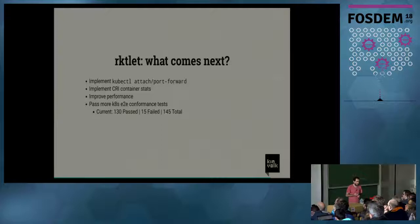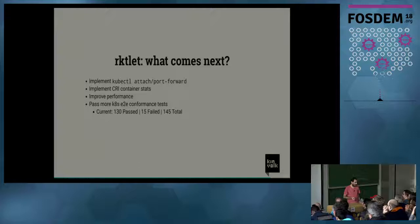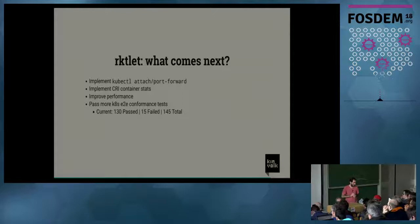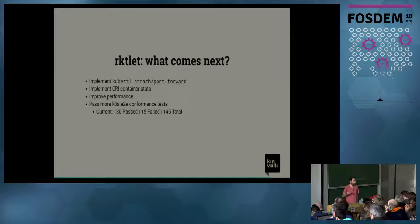What comes next for RocketLib? We don't fully support the CRI — the most important missing things are kubectl attach and port-forward, which don't work at the moment, although iottymux allows us to do that once we write the code. The CRI container stats interface, where the kubelet can ask for stats instead of using CAdvisor to check cgroups manually, is not implemented. We should also improve performance, since we've been focusing on making things run rather than optimizing. We run the end-to-end conformance tests in Kubernetes — currently we pass 130 and fail 15.